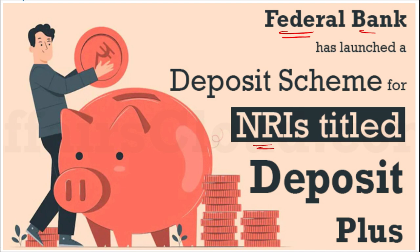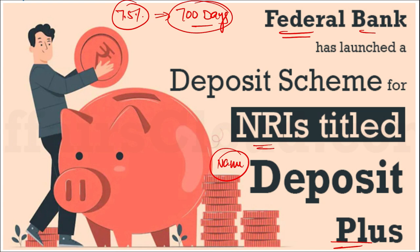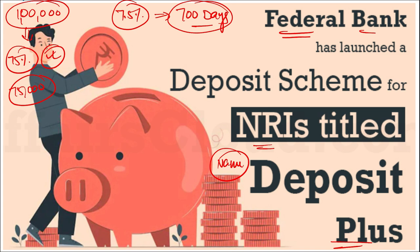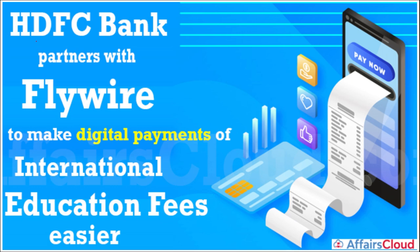Federal Bank has launched a deposit scheme for NRIs called 'Deposit Plus.' It offers 7.5% interest for a period of 700 days on a fixed deposit. The fixed deposit cannot be broken before the desired time period. However, you can avail a loan of up to 75% of the deposit amount — for example, a loan of ₹75,000 on a ₹1 lakh deposit.